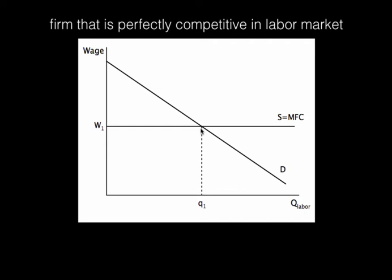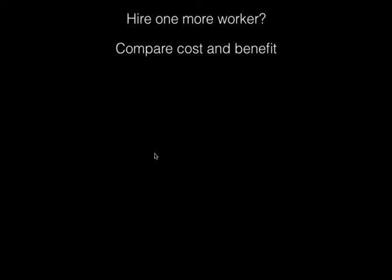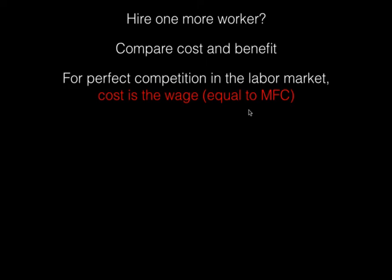This firm wants to make a profit-maximizing decision — not in the output market, but in the labor market. What is my profit-maximizing amount of labor to hire? We're making a marginal decision: do I want to hire one more worker? Just like anything else, we're comparing costs and benefits. The cost of hiring one more worker — there's a market wage, I'm a wage taker. For a perfectly competitive firm, marginal factor cost equals the wage, since I can hire as many workers as I want at that market wage.